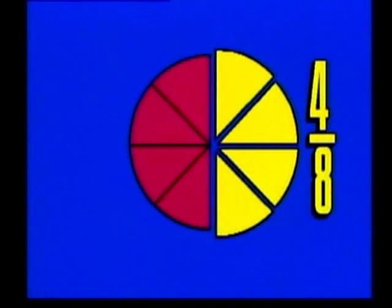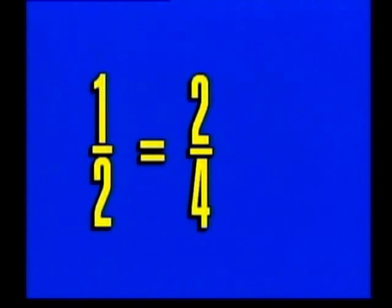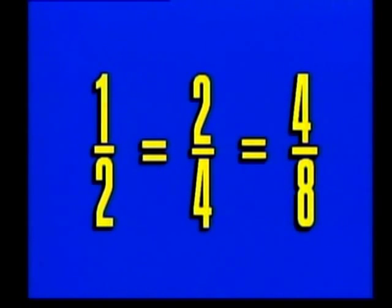So that's what it means to say that one half, two fourths, and four eighths are equivalent fractions. Equivalent fractions name the same part of a whole.